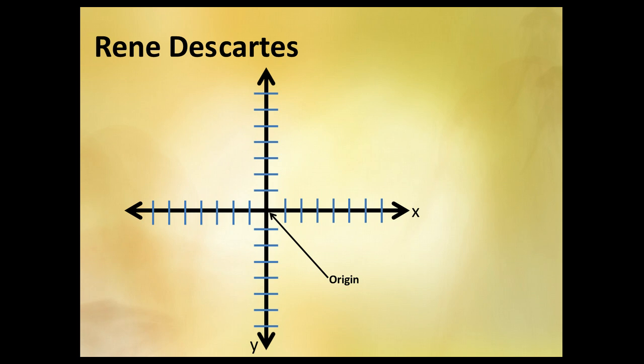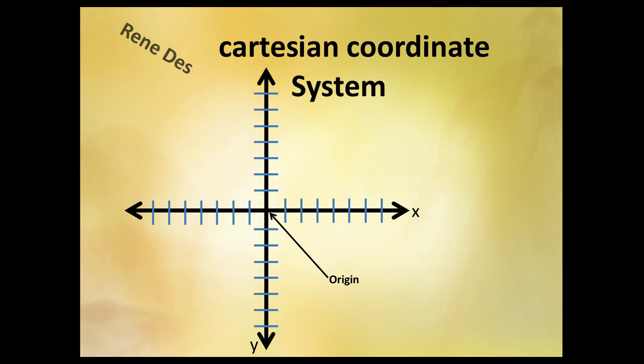And the Cartesian coordinate system, also known as a rectangular coordinate system, actually came from Rene Descartes' name. They took the cart off the back and said Cartesian and became the Cartesian coordinate system.